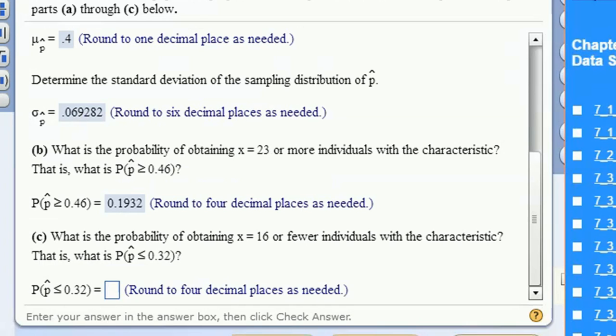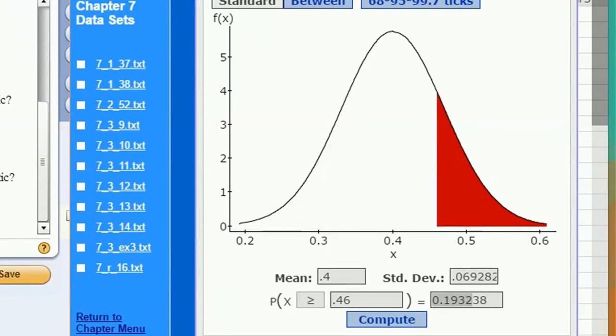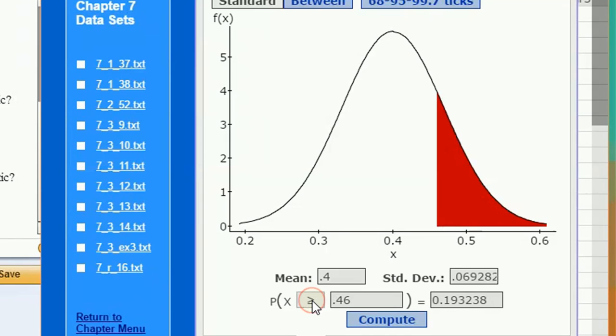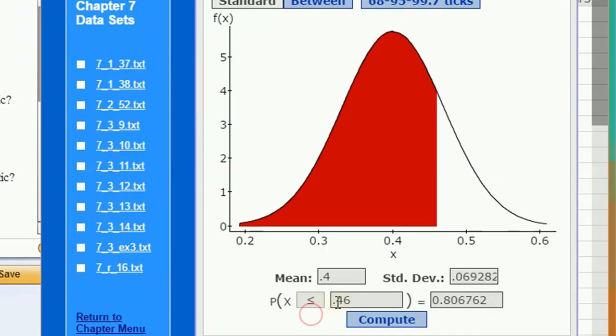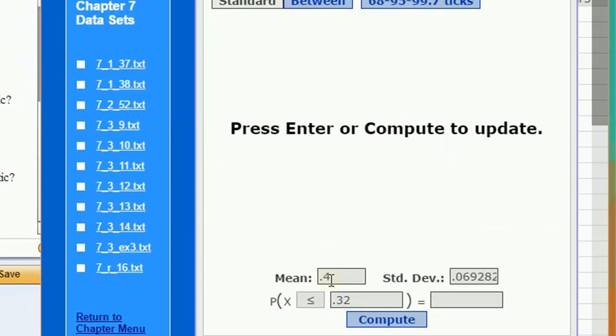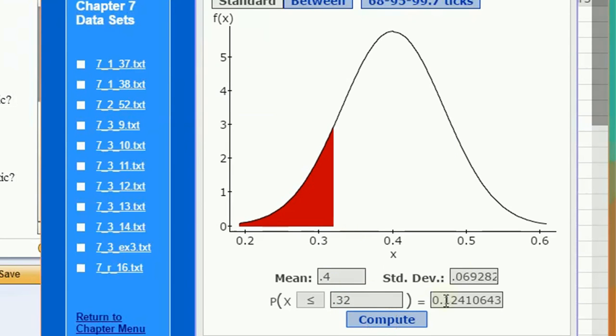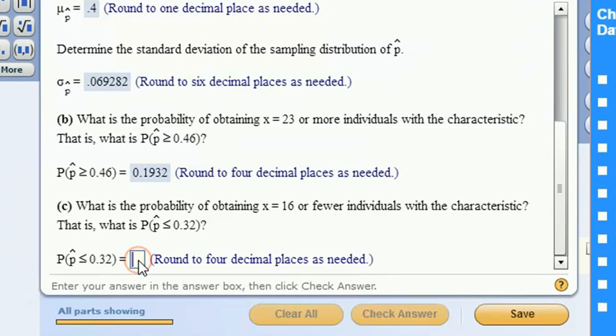Okay. The probability of obtaining 16 or fewer, also known as what's the probability of getting a sample proportion less than 0.32? The same probability distribution. Now we just calculate a left tail probability. There we go. So 0.1241.